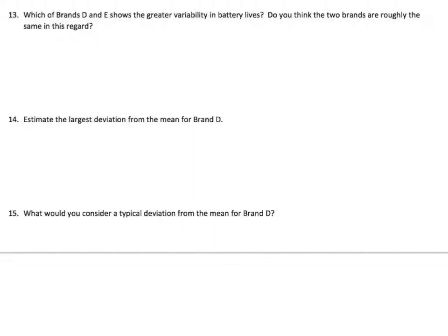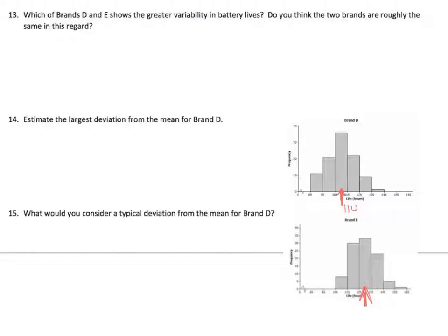Which of brands D and E shows the greater variability in battery lives? Do you think the two brands are roughly the same in this regard? I needed a picture of D so I could answer that. It's a little hard to answer without looking at a picture. In which of brands D and E shows the greater variability? Variability, let's see. I've got like 85 to 145. Well, that's all right. 105 to 165. So our spread is 85 to 145 or 105 to 165. It's a little off. It's a little off, but I mean, you could argue either way for this one in my mind. Roughly the same. I'm going to guess roughly the same. That doesn't seem to be too far off.